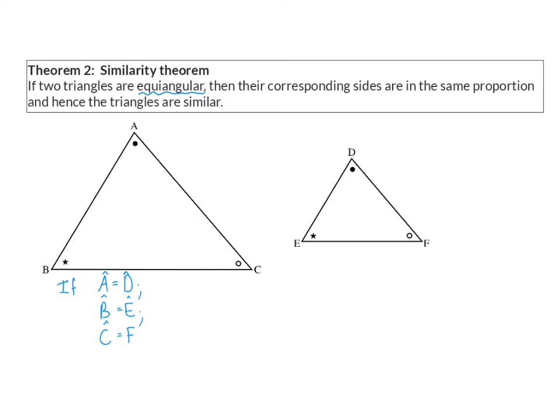And this theorem says that if we know that these corresponding angles are the same size, we can immediately accept that the sides will also be in the same proportion, and that these two triangles are then similar.